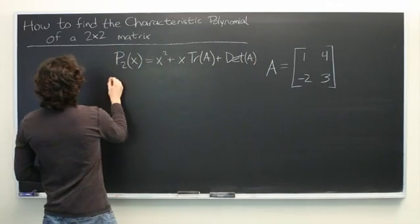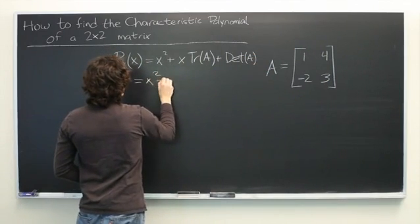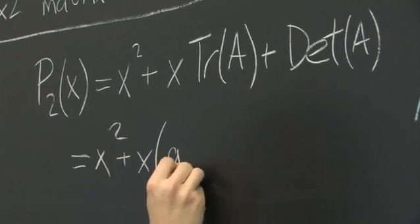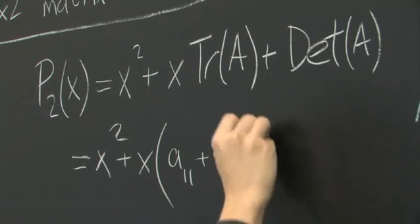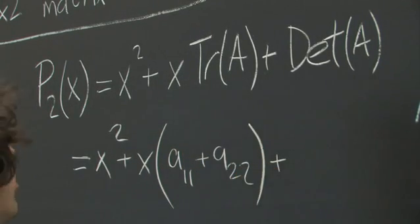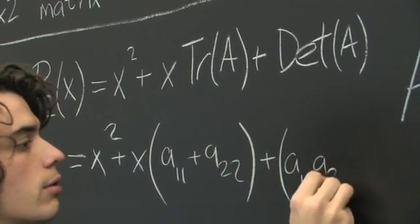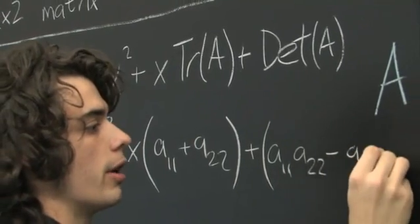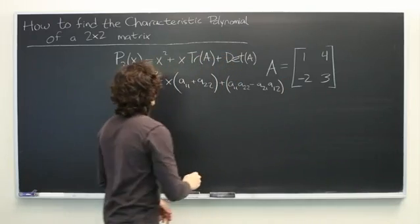So, we want to write that out explicitly. x squared plus x times a11 plus a22 plus a11 times a22 minus a21 times a12.